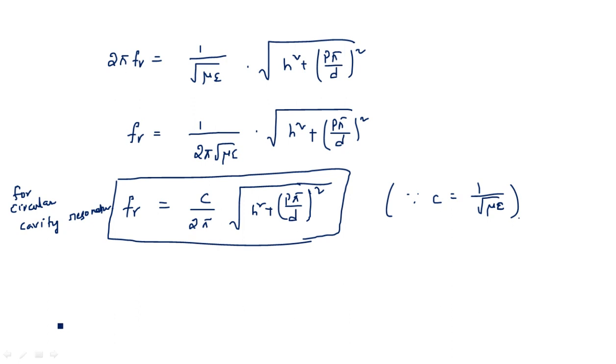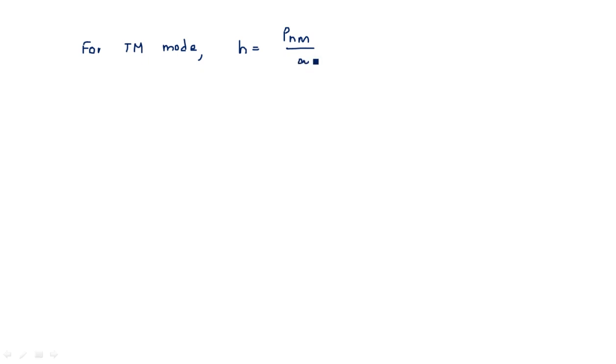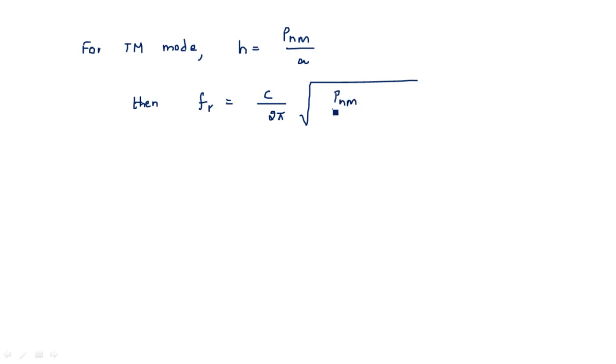We know the value of h for TE and TM modes. For TM mode, h = pnm/a, where pnm is the Bessel function root. Substituting: fr = (c/2π) × √[(pnm/a)² + (pπ/d)²]. This is the resonant frequency of the circular cavity resonator for the TM mode.